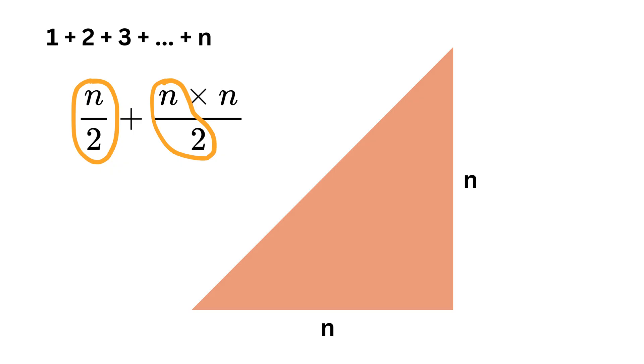Take n by two as common from here to get n by two times n plus one which is nothing but the formula for the sum of the first n natural numbers. Wow! Nice!